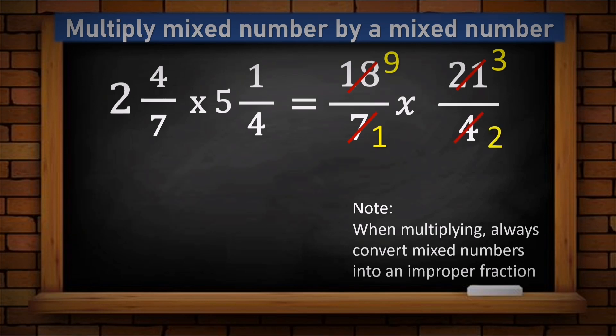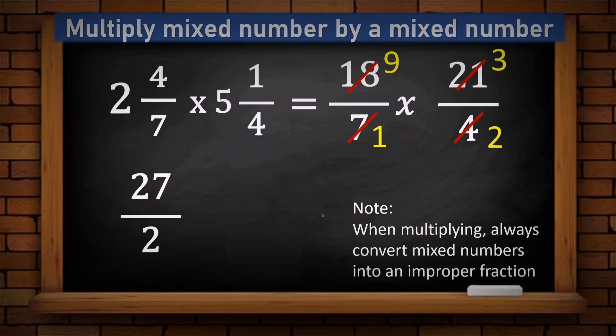After cancellation: eighteen divided by two is nine, four divided by two is two. Now multiply: nine times three is twenty-seven, one times two is two. Our answer twenty-seven over two is an improper fraction, so we convert to a mixed number. How many twos in twenty-seven? Thirteen, with one remaining. The final answer is thirteen and one half.